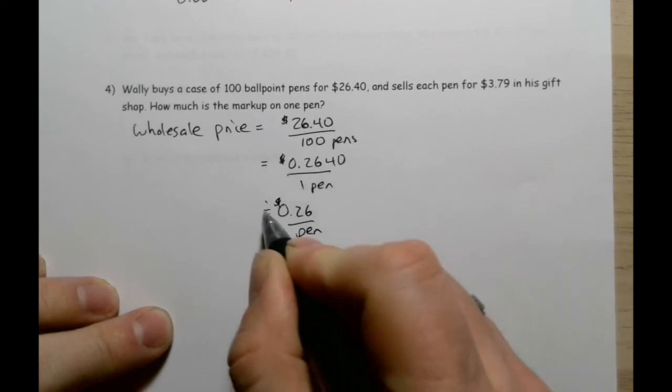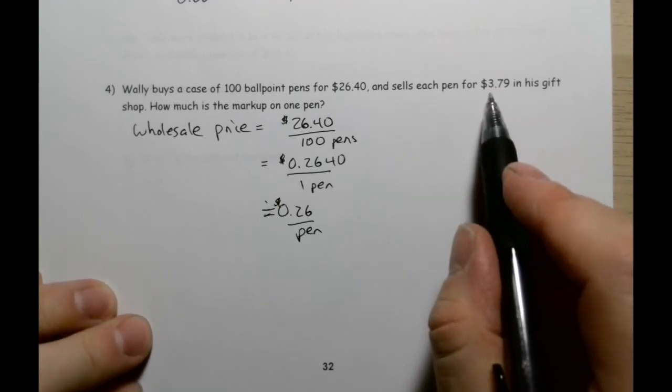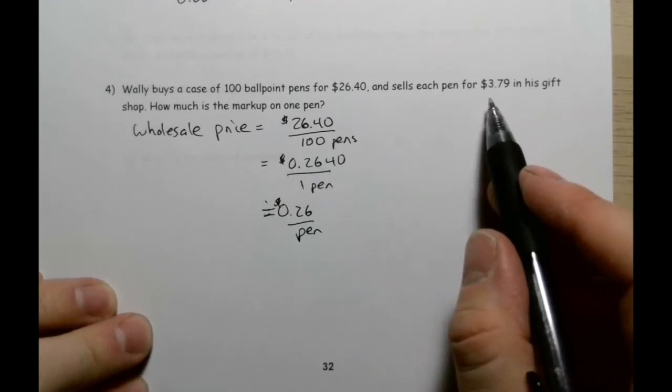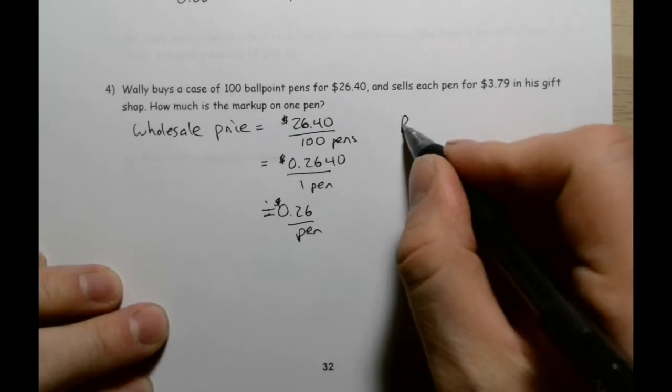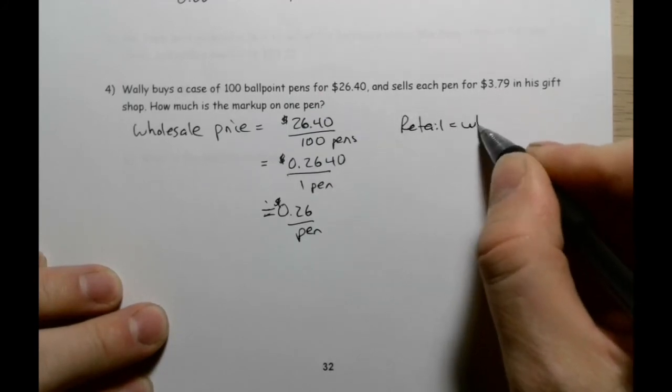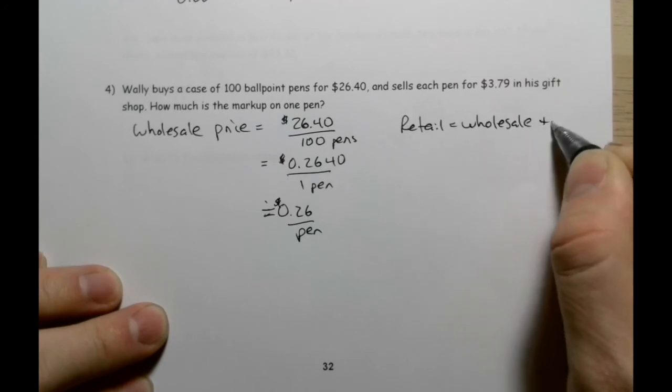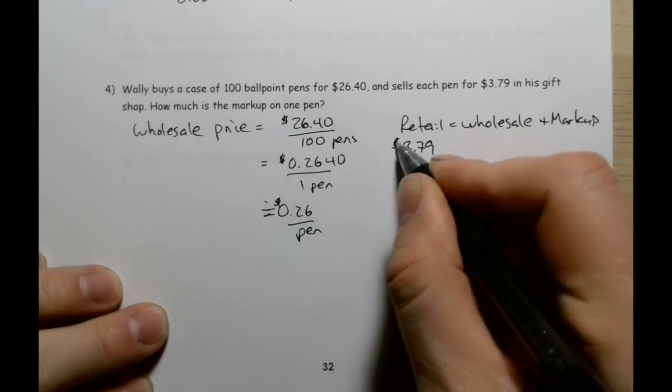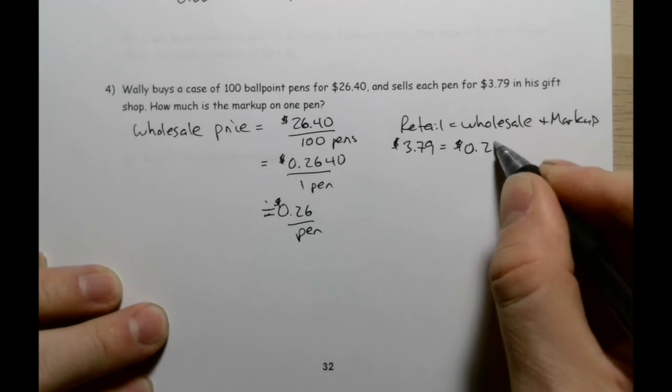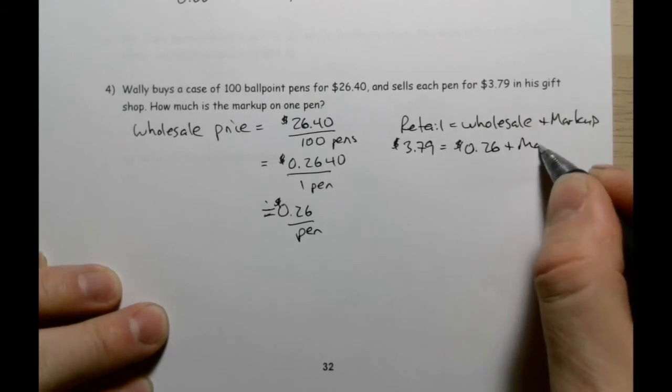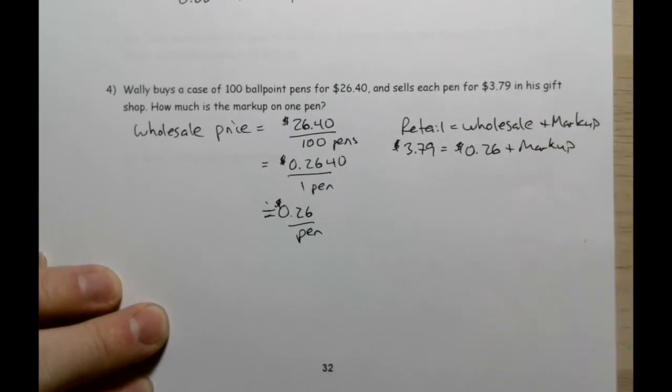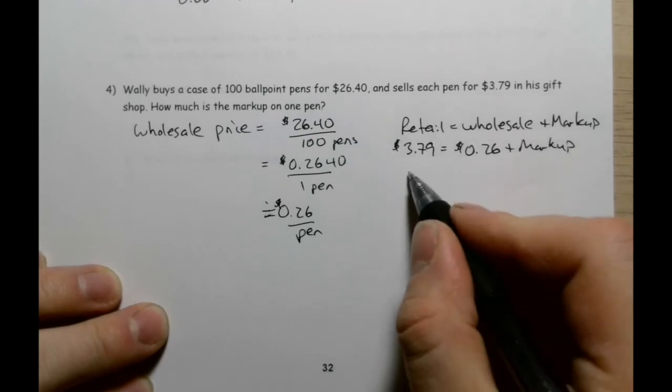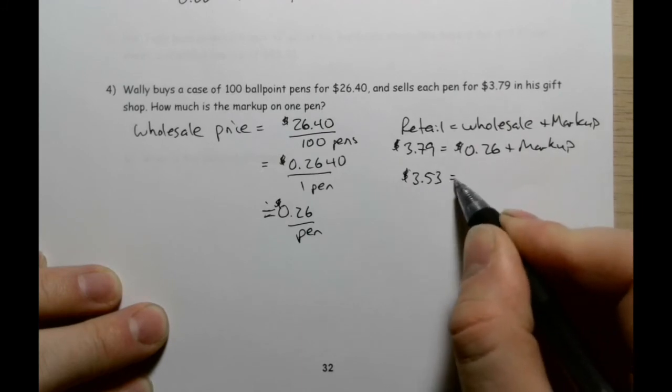Now, he sells each pen for $3.79. Remember how this works: retail equals wholesale plus markup. We know that he's selling each pen for $3.79, but it's only costing him 26 cents to get that pen. So when I subtract that, when we go $3.79 minus the 26 cents that it cost him, we get a $3.53 markup. That's how much he's adding to each pen.